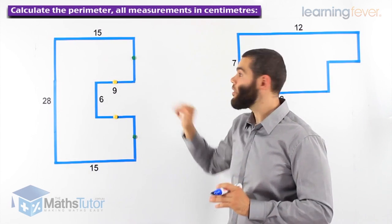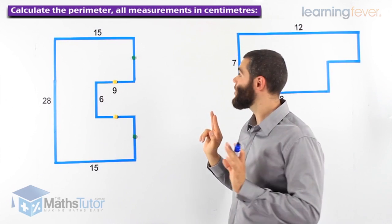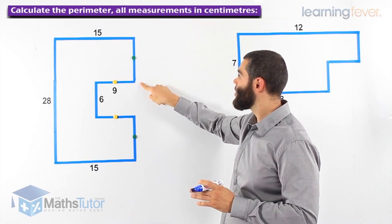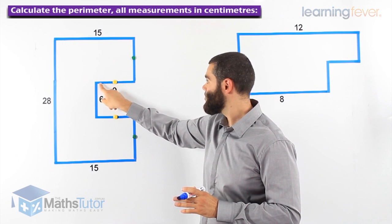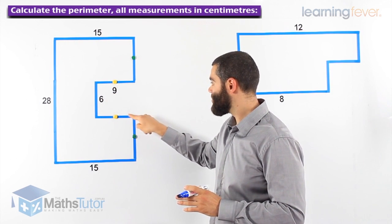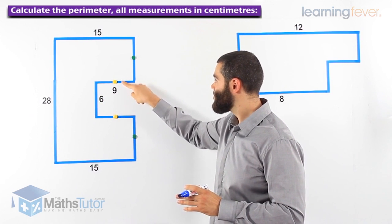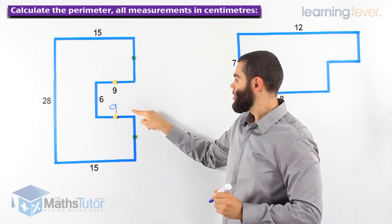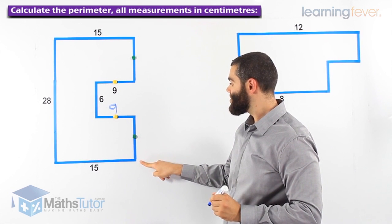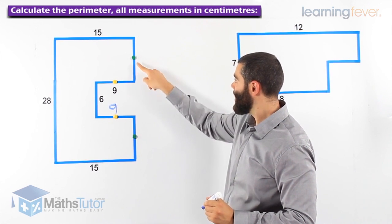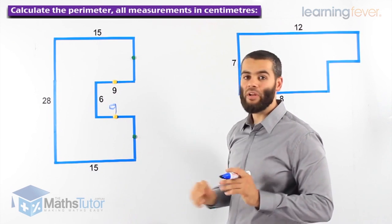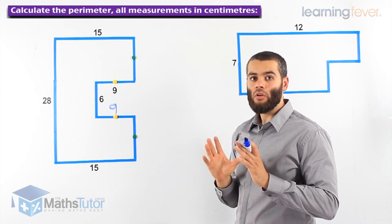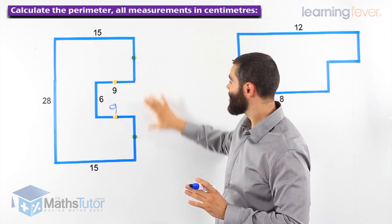Starting from the top, we know this side is 15. Coming down, there's a missing side. We know one side is 9, another is 6, and there's a missing side — however, it has the same mark as the 9, which means it is also 9. Going further, another side is missing, but it has the same mark as the one on top. We need to find them. This side is 15 and this is 28.